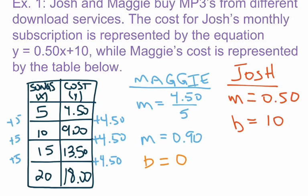The question then becomes: which one's a better deal? The answer depends on how many songs you download. If you don't download any songs, Maggie pays nothing while Josh still pays $10 a month. So Maggie's subscription is better if you're not downloading much. But if you download a lot of songs, eventually that 50 cents per song will overcome the $10 monthly fee and Maggie ends up paying more. Let's find out who has the better deal for 30 songs a month.